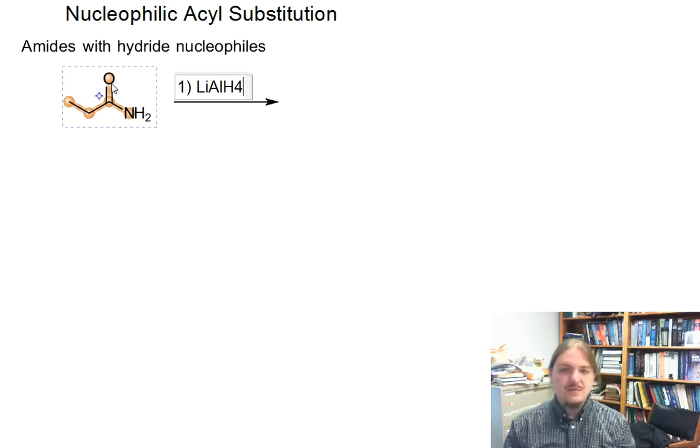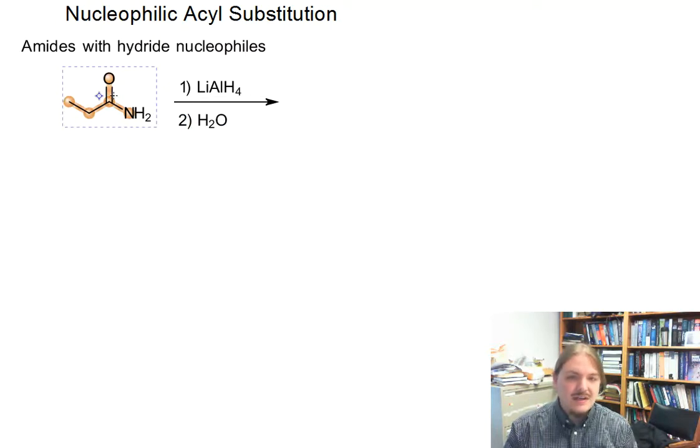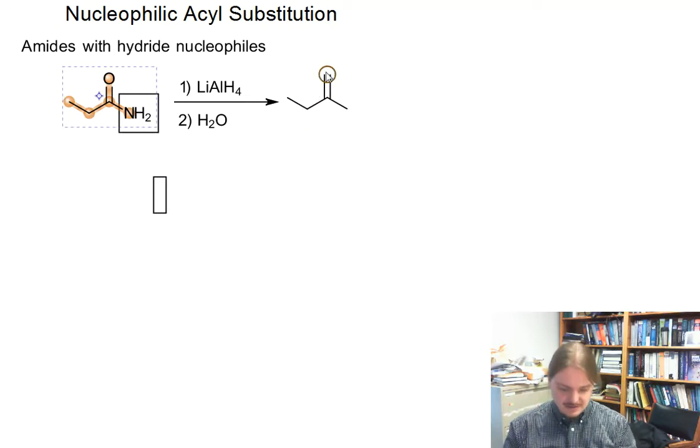Because you will figure that like any other of the carboxylic acid derivatives, we have this convenient leaving group and lithium aluminum hydride replaces it with the hydrogen and then goes on to reduce this aldehyde to the alcohol.